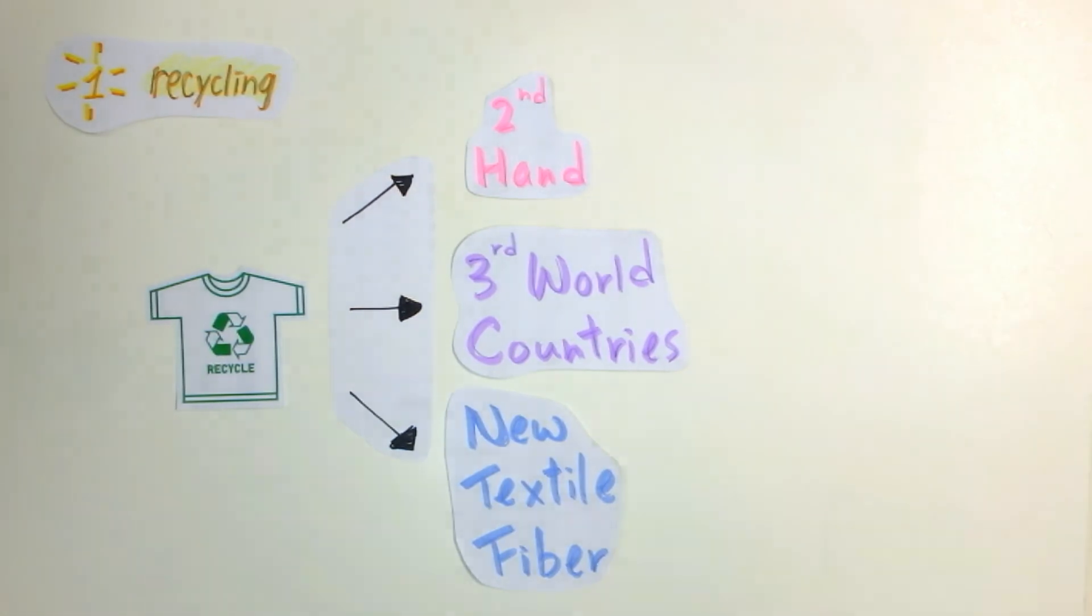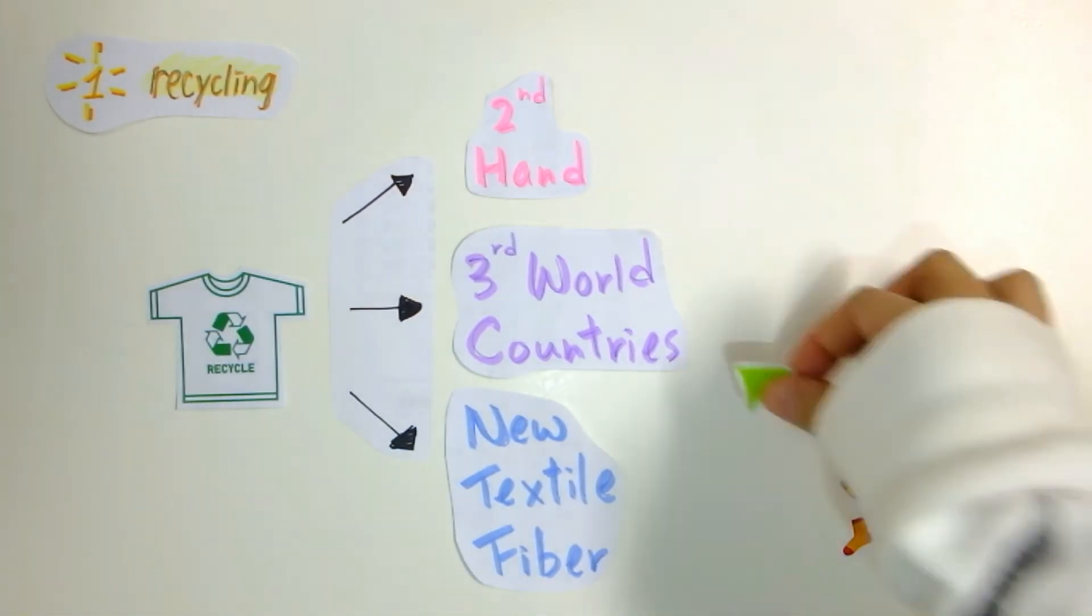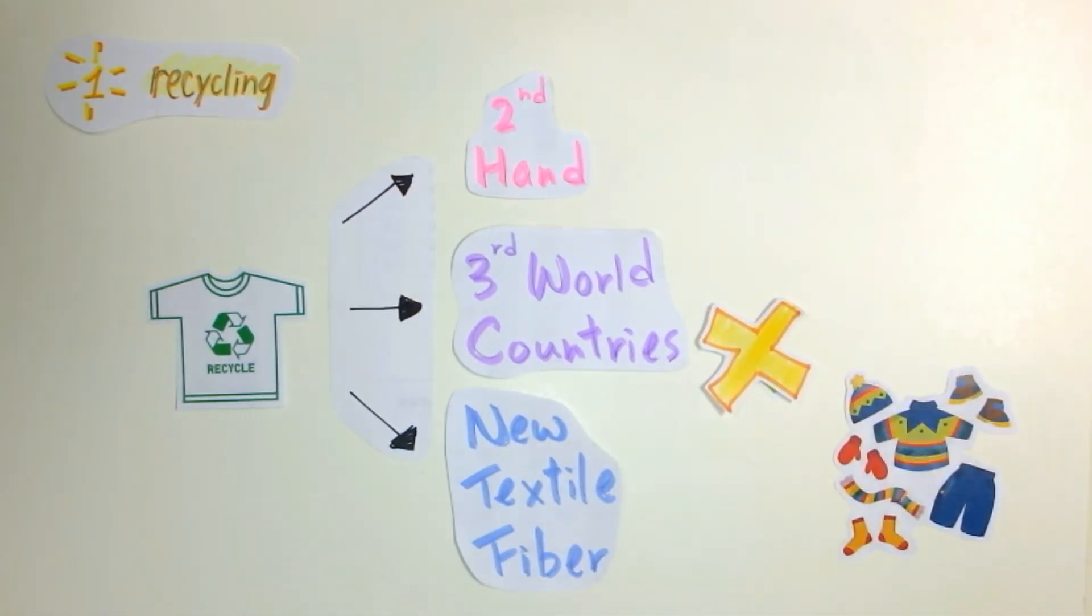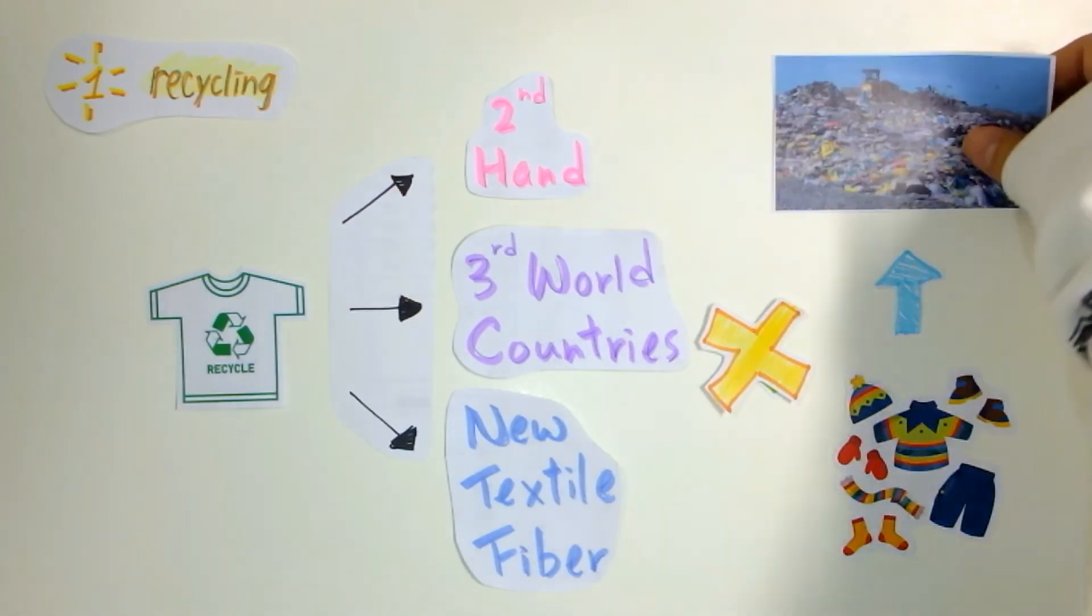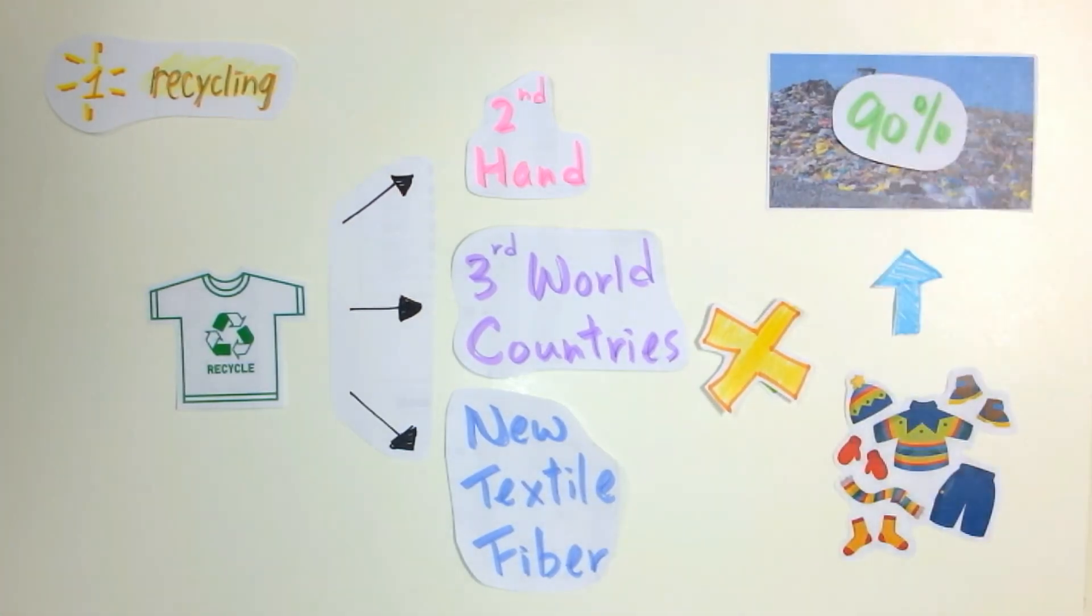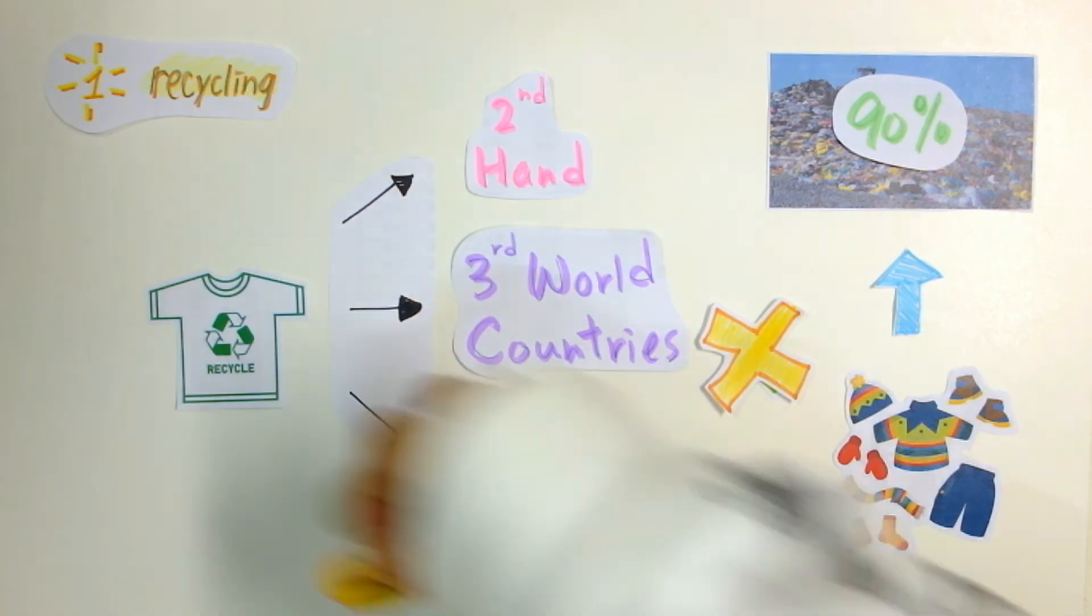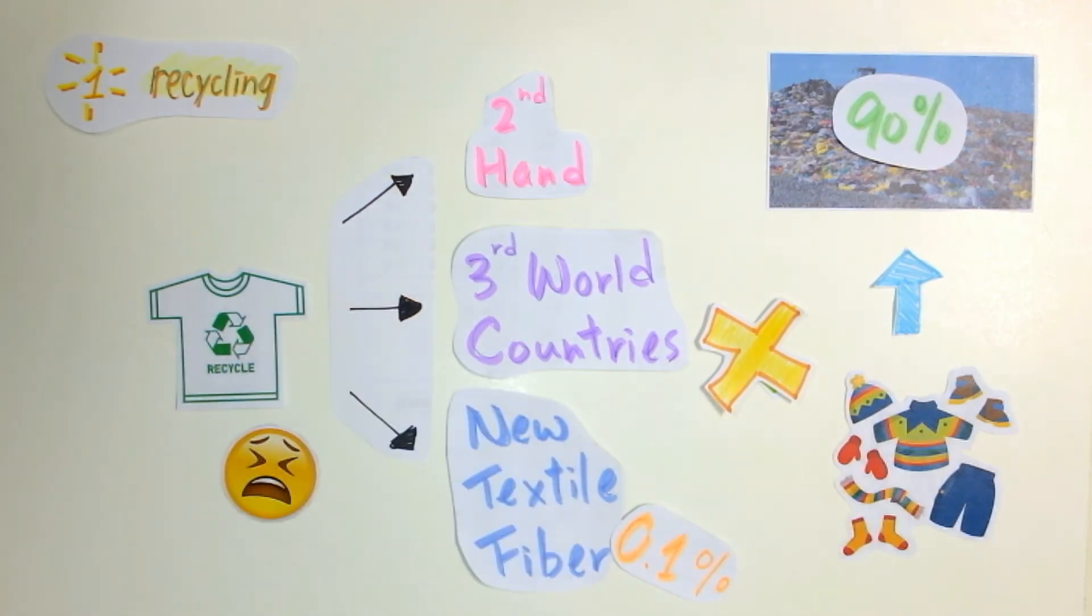For example, clothes for winter are always not suitable for sending to developing countries and are finally sent to landfill. Almost 90% of collected clothes are finally sent to landfill, and only 0.1% is recycled into new textile fiber. The benefits of recycling seem unremarkable.